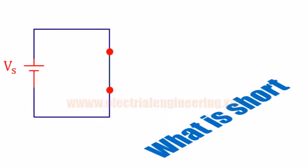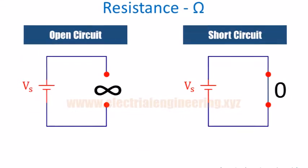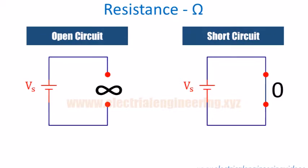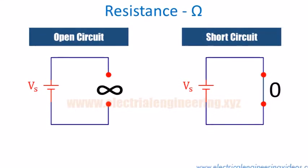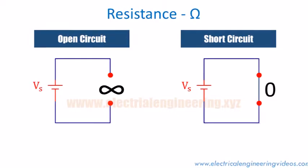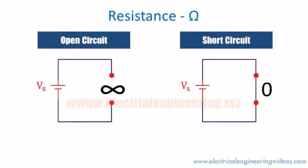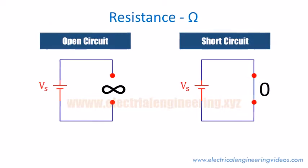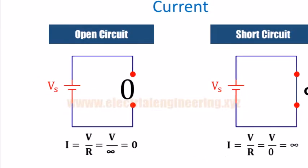In terms of resistance, an open circuit has infinite resistance whereas a short circuit has very small resistance. An ideal short is one having zero resistance, while practical short circuits could have very small resistance.